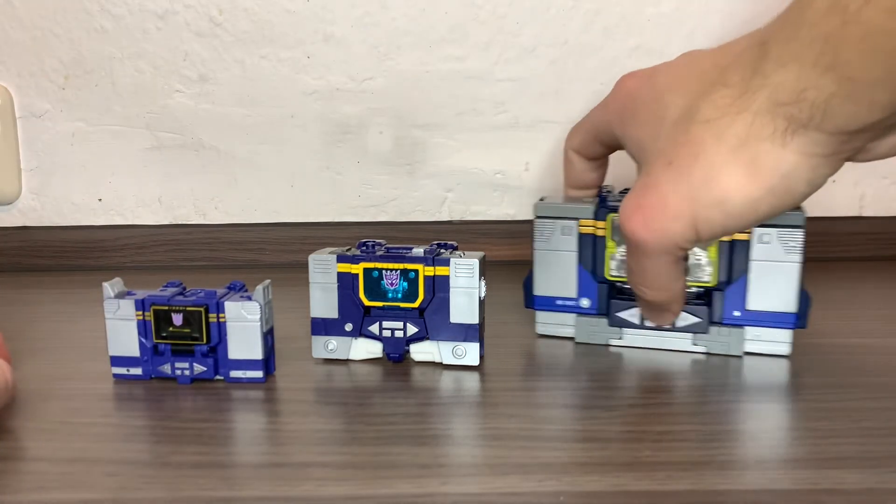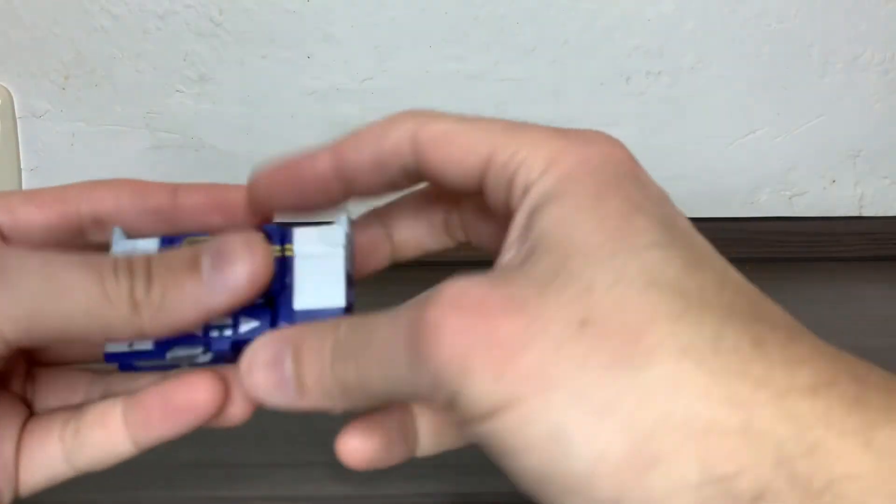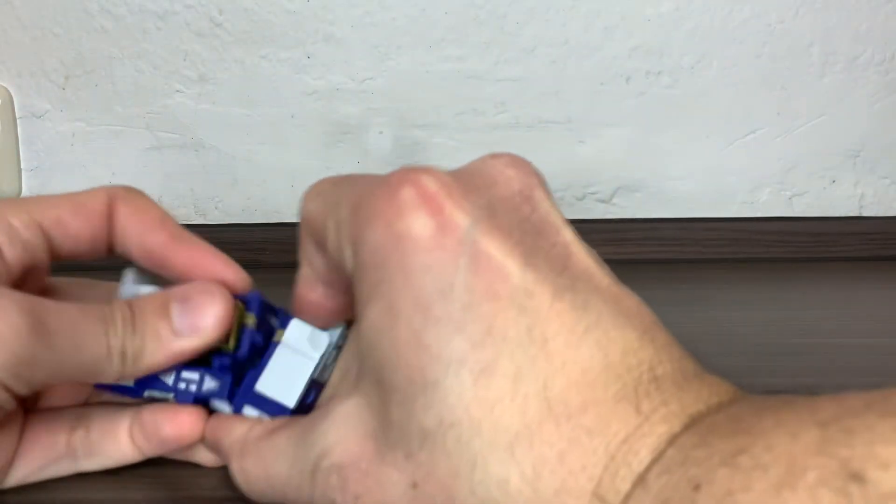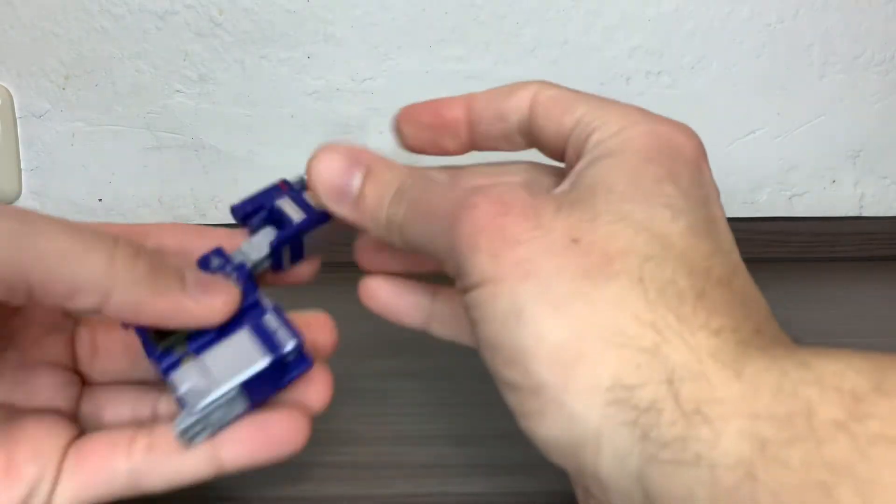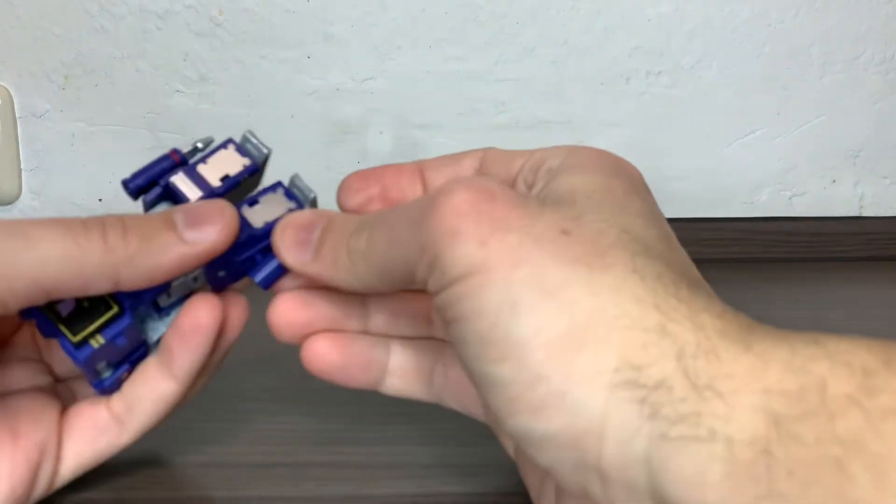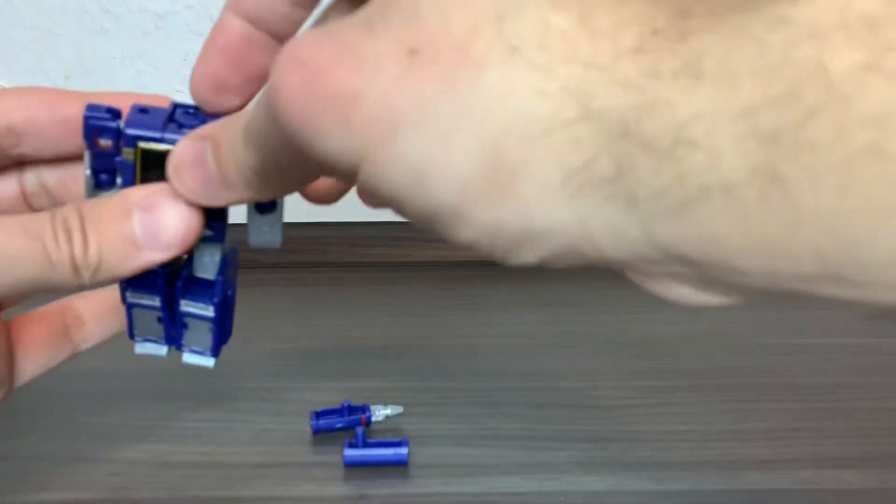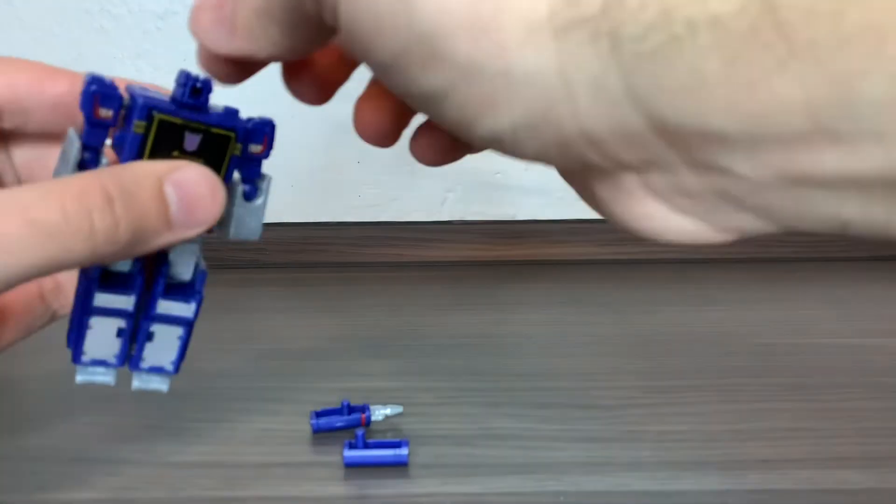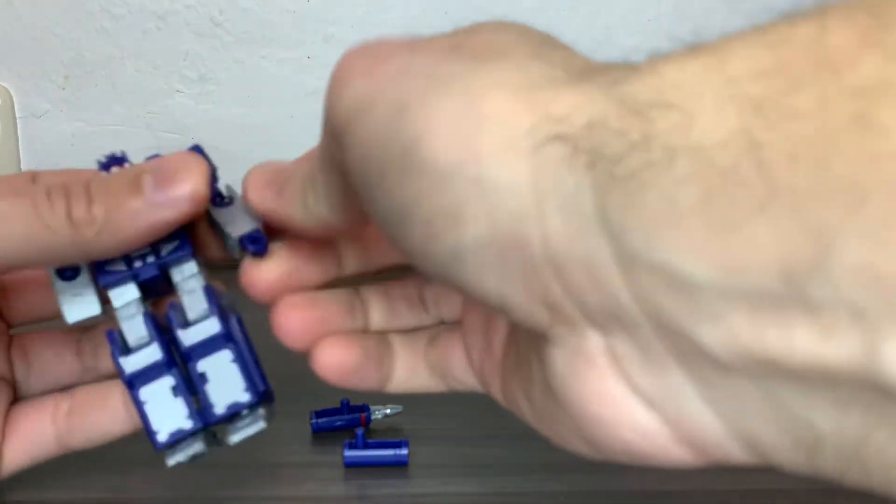To transform him back, just do the same thing the other way around. You untab the legs, turn them around, bring the feet out. Untab the other leg, turn it around, bring the foot out. You unplug the weapons with your nail.